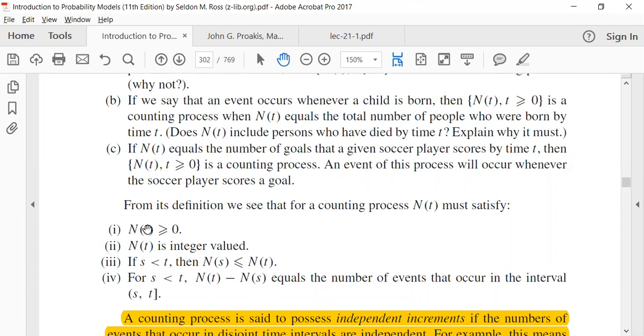Number one: N(T) is greater than zero for any time T greater than zero. Your N(T) is either zero or one, two, three, whatever, and T is integer valued - number of goals, child born, or whatever.